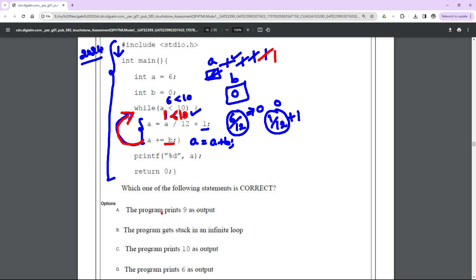Based on that we can say, does the program print 9 as output? No. The program gets stuck in an infinite loop? Yes, so this is going to be the correct answer. Does the program print 10 as output? No. Program prints 6 as output? No. So the correct option will be option b. I hope you understood clearly, thank you.